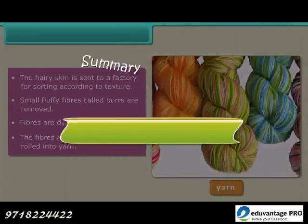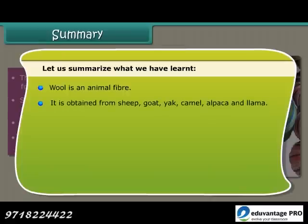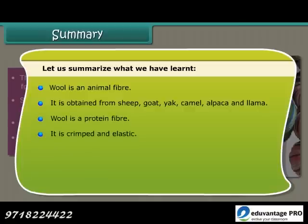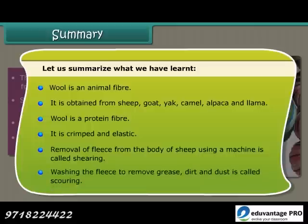To summarize: wool is an animal fiber obtained from sheep, goat, camel, alpaca, and llama. Wool is a protein fiber — it is crimped and elastic. The removal of fleece from the body of sheep using a machine is called shearing. Washing the fleece to remove grease, dirt, and dust is called scouring.